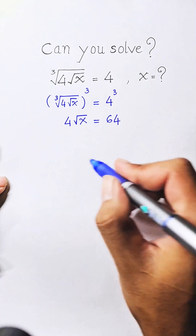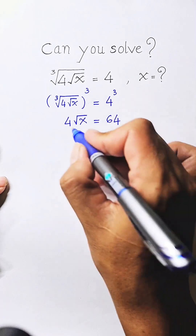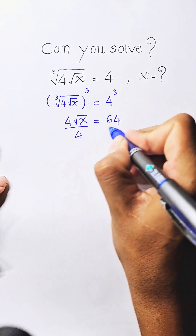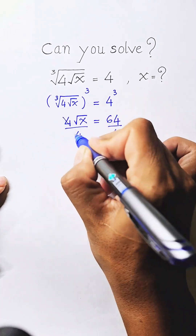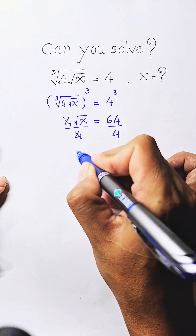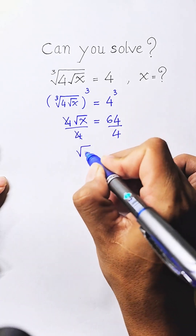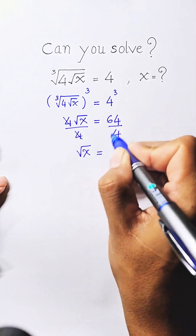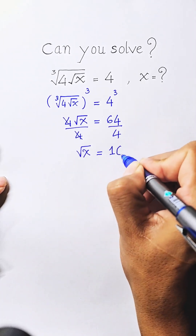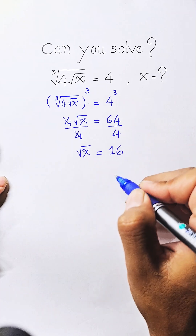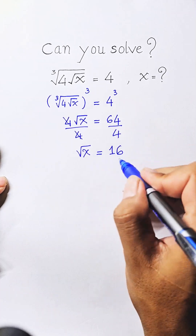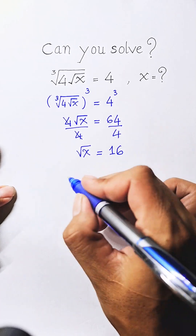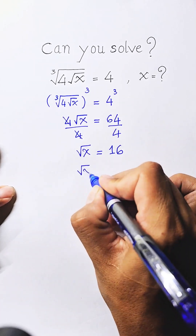Then we divide both sides of this equation by 4. We simplify and get square root of 8 equals 16. Then we raise both sides of this equation to the square.